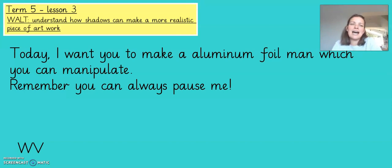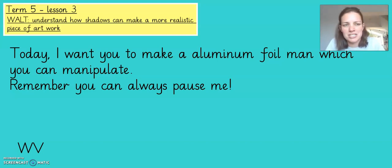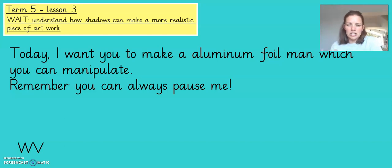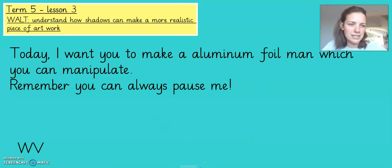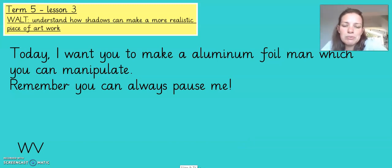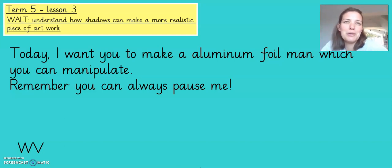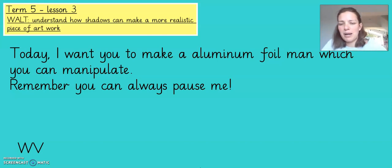Today I want you to make an aluminium foil person, which you can manipulate, and then I have an activity for you to do after that. Remember you can always pause me and catch up. I'm going to play a short video now of how I would like you to make the aluminium foil person — man, lady, or child. You can be as creative as you like. Once you know how to make one, you could also make an aluminium animal, trees, or different objects and have a general play around.